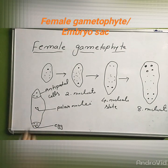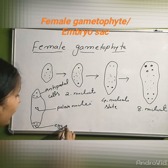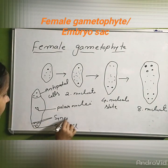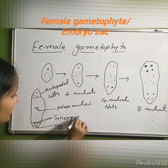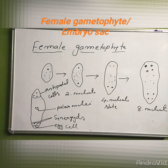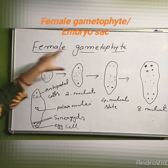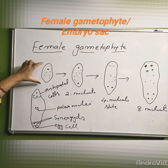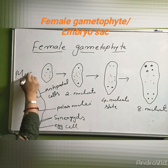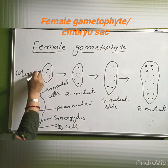One cell remains as the egg cell, and the rest are called synergists. The function of synergists is to provide nourishment to the egg cell. This whole structure is the megaspore, or female gametophyte — this is the functional megaspore.